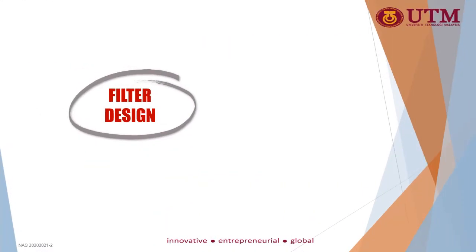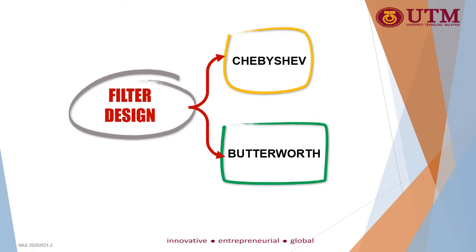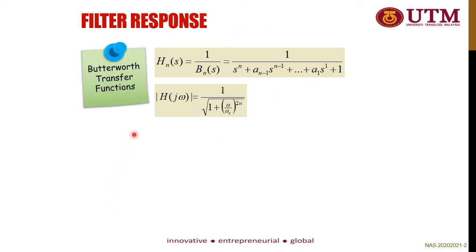Let's discuss two types of filters: Chebyshev and Butterworth. Butterworth and Chebyshev filters have different types of response, for example in the transfer function itself. The first one shown is the transfer function for the Butterworth filter — you can see the constant 1 on top, and at the bottom there is S to the power of N, where N is the filter order number you need to determine before designing a filter, and then a series of A coefficients, which are polynomial coefficients of the filter.